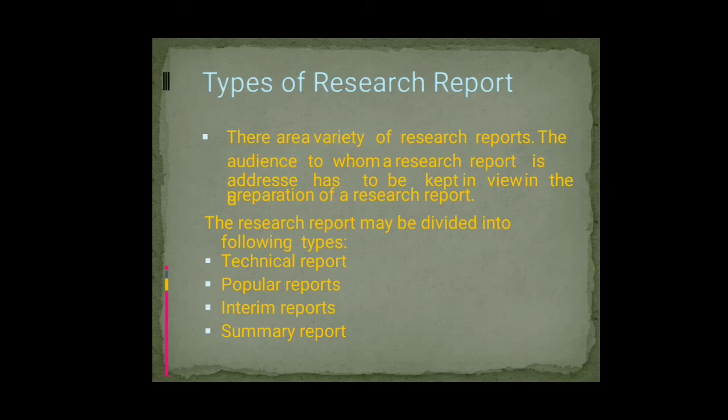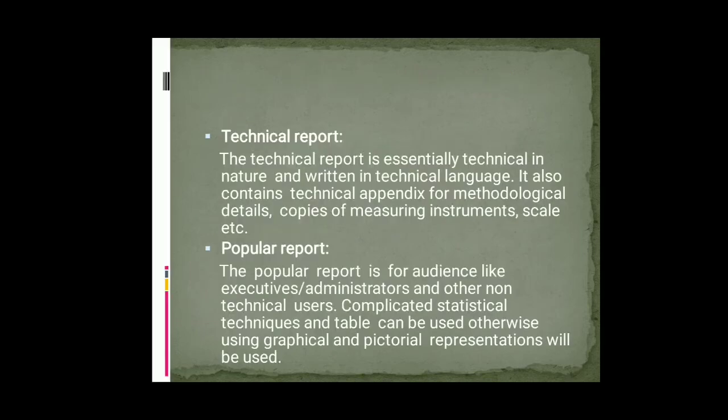Next are the types of research report. There are various types of research reports. The audience to whom a research report is addressed has to be kept in view in the generation of the report. Research reports may be divided into the following types: technical reports, popular reports, interim reports, and summary reports. The first is the technical report. The technical report is essentially technical in nature and written in technical language. It also contains a technical appendix for methodological details and copies of measuring instruments, scales, etc.